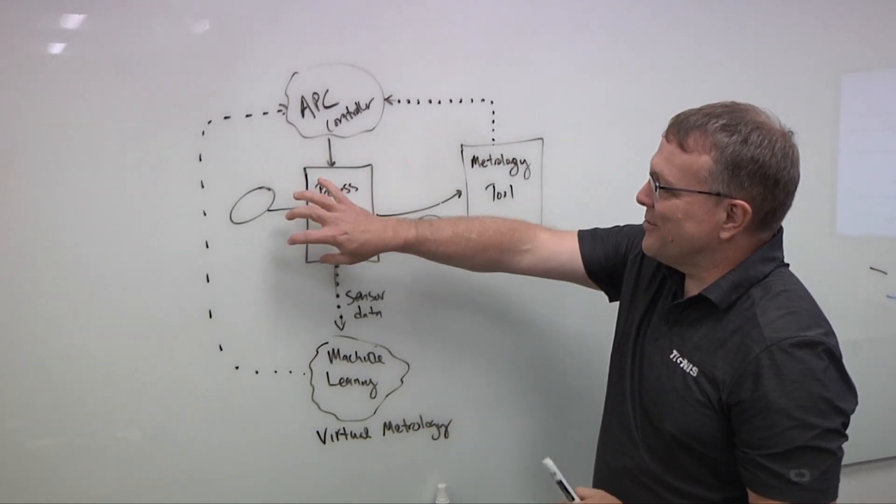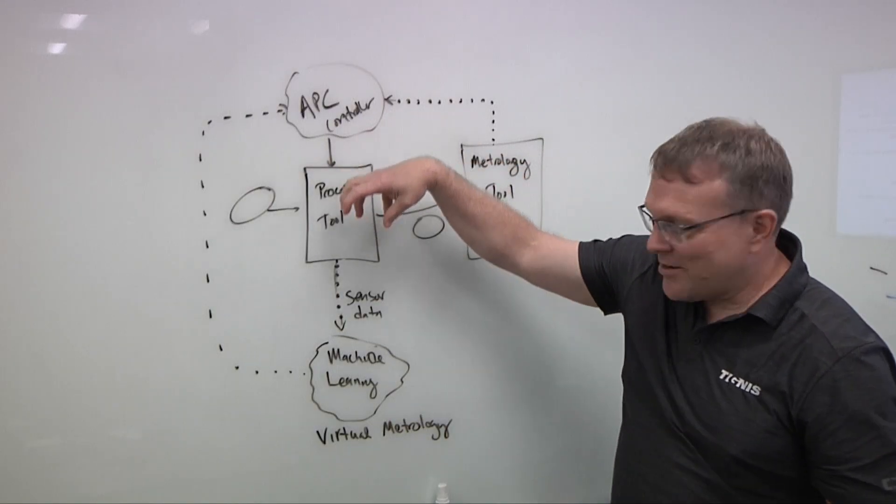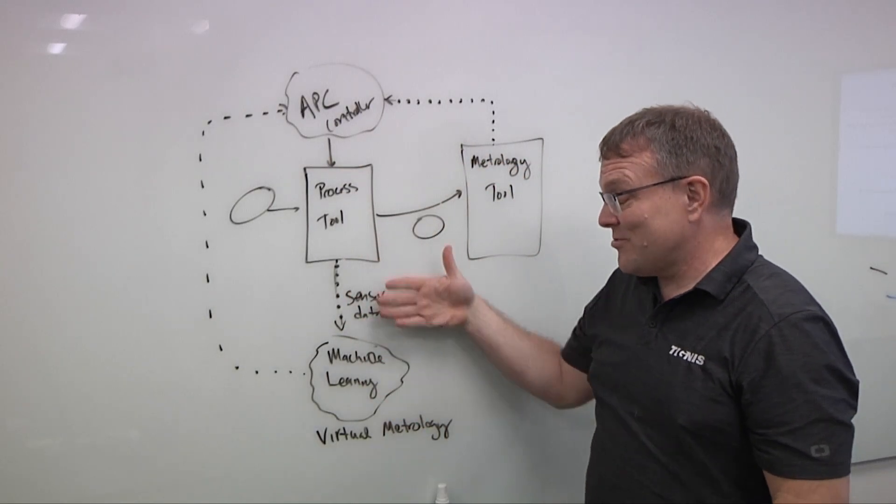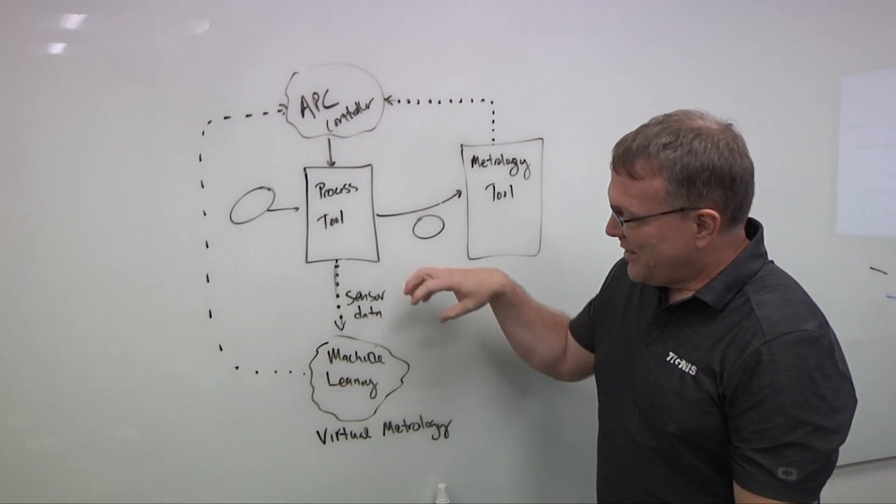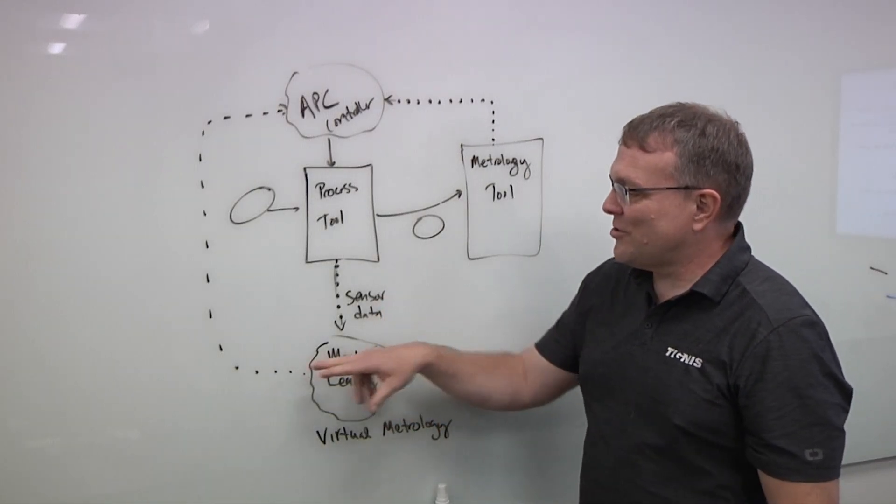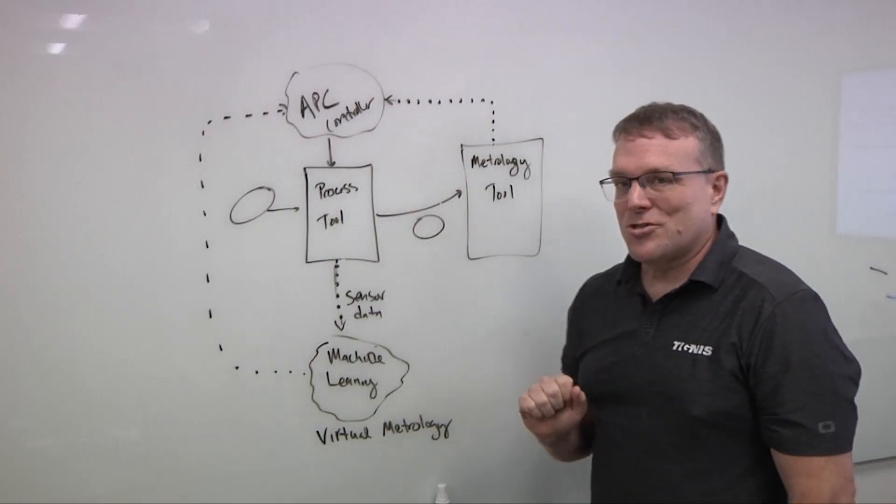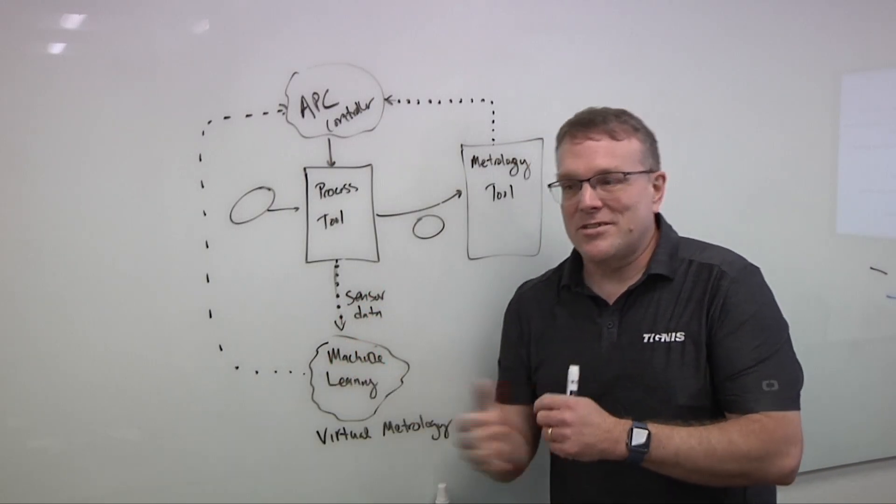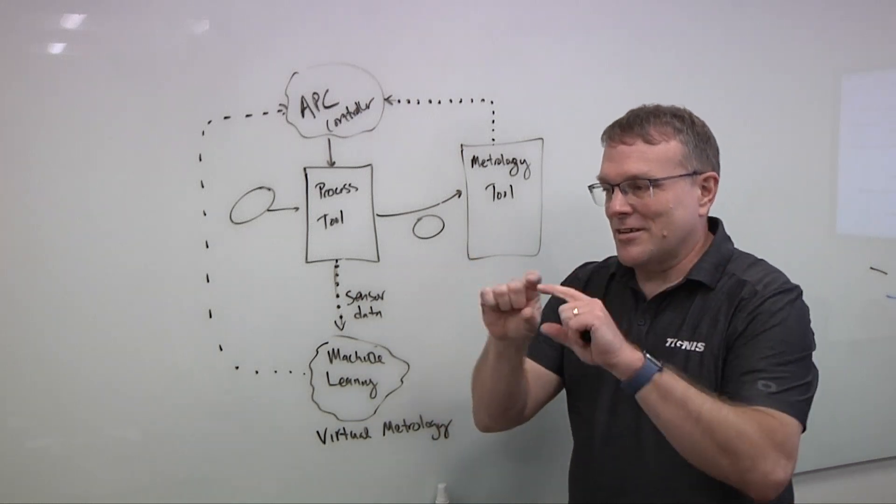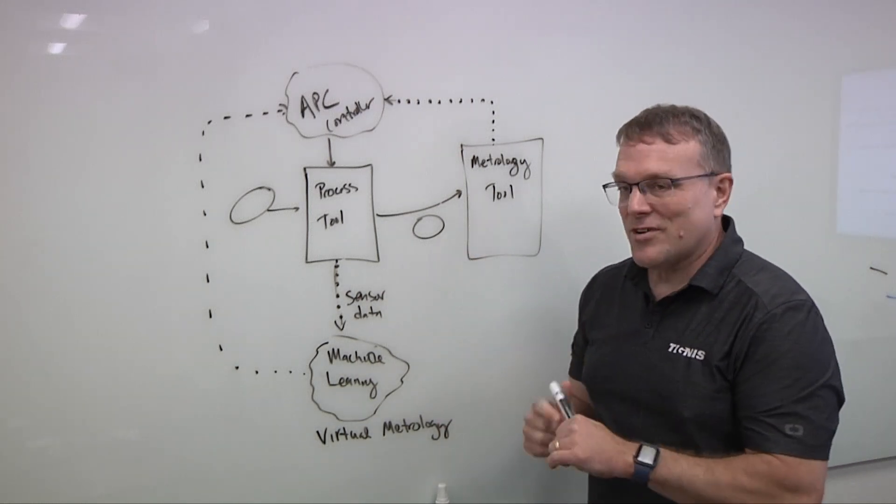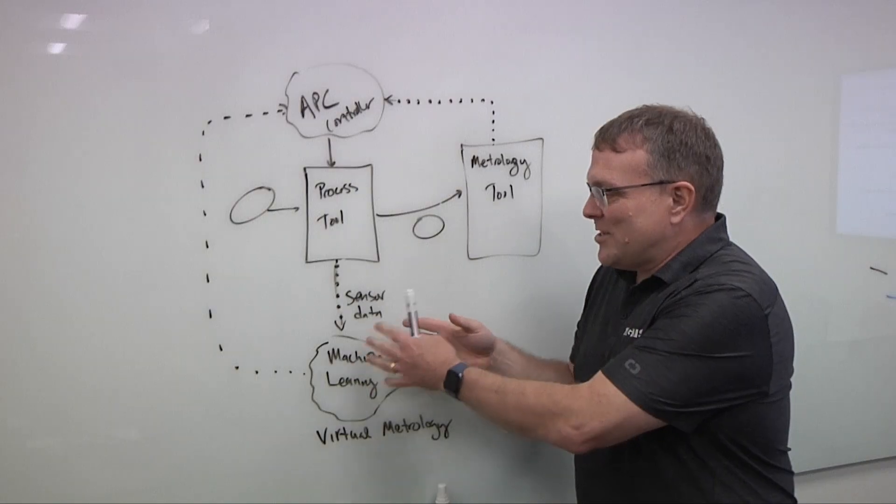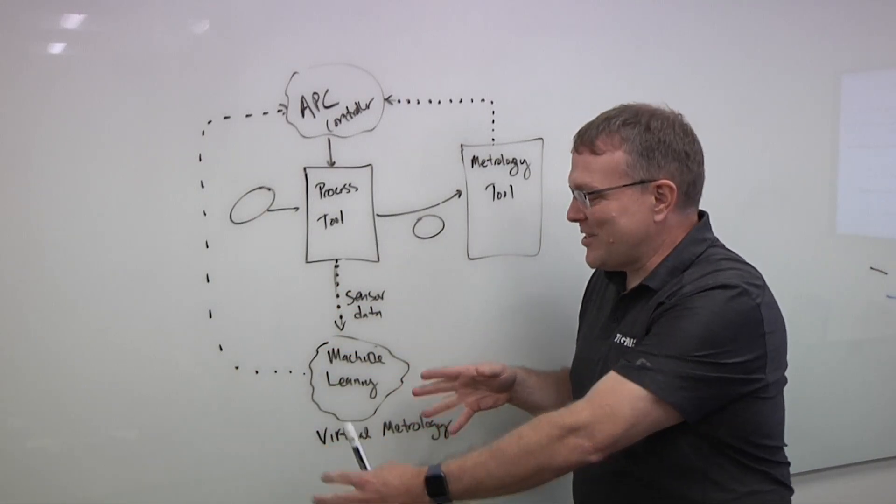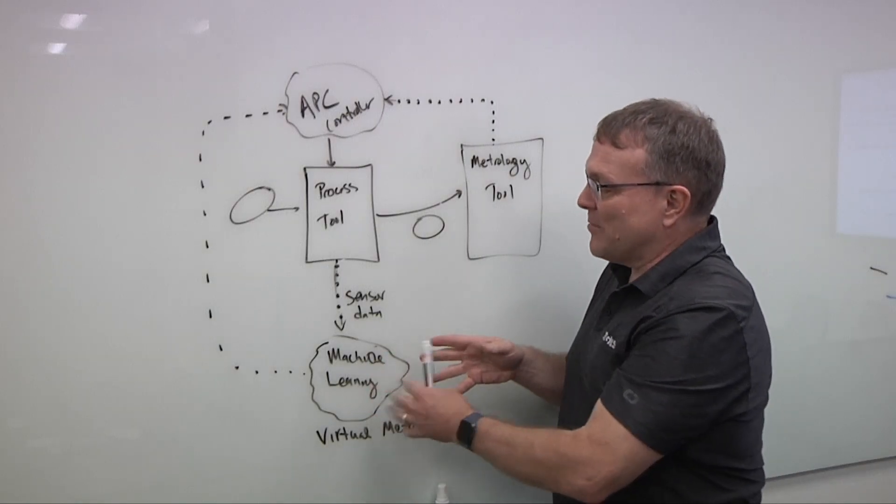And so can we have this parallel process where we take all this sensor data that's coming off of this process tool, which can be some hundreds or thousands of sensors, and feed it into a machine learning model, which in turn then predicts what the metrology tool would do. Now, if it's etch, maybe it's predicting the critical dimensions. If it's CMP, maybe it's predicting the thickness or the thickness variability. We just need to be able to structure the sensor data like that matrix we talked about in that previous session. And we should be able to do a machine learning model.